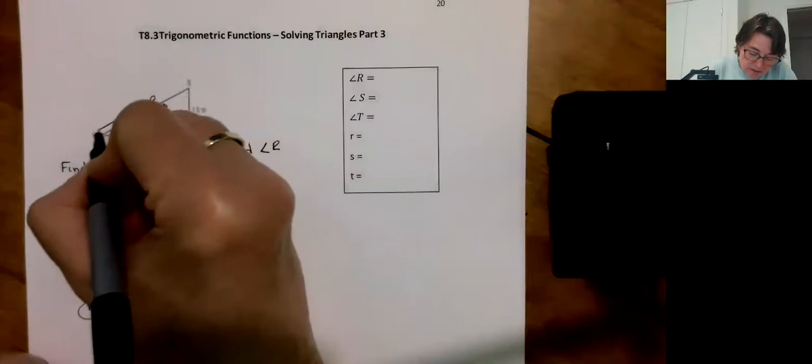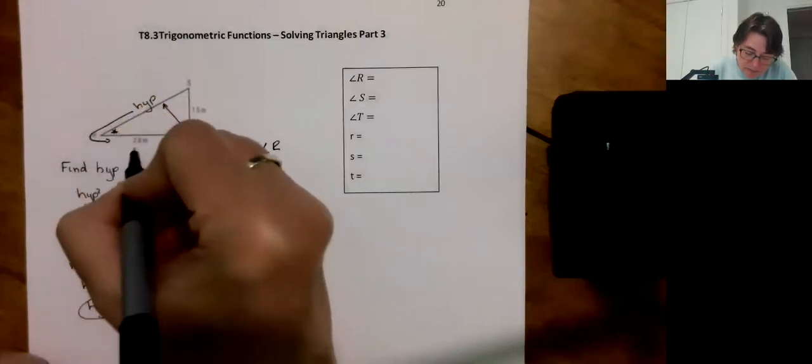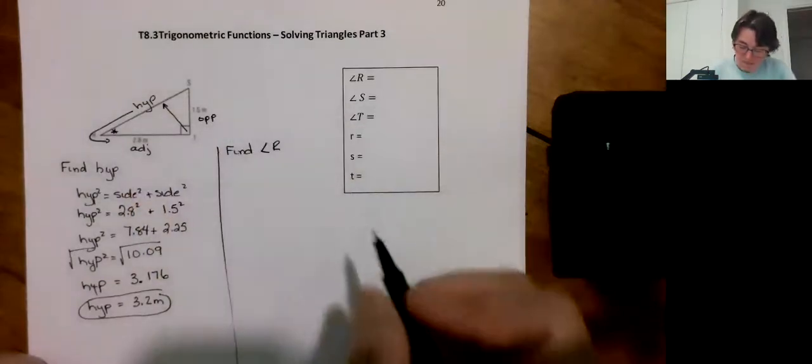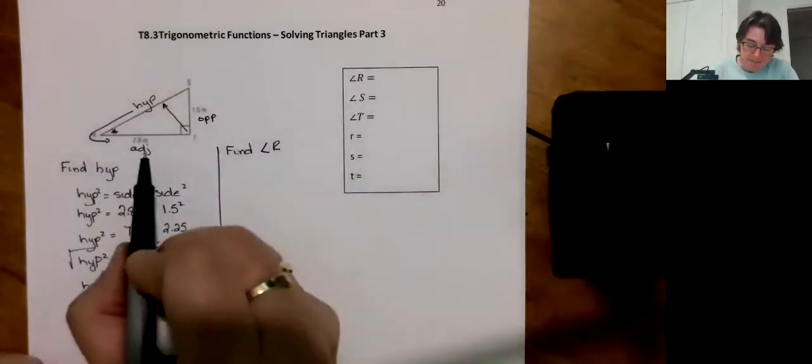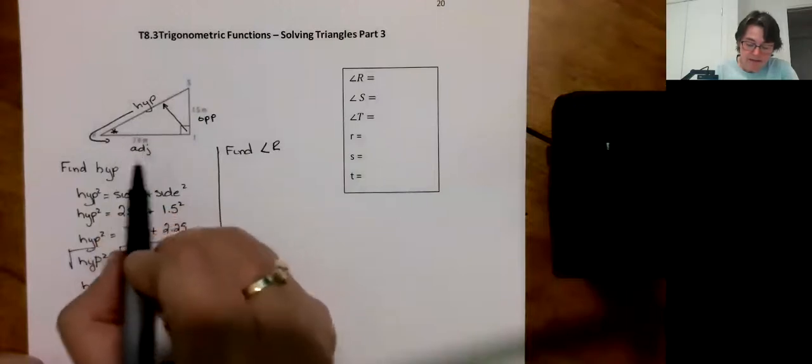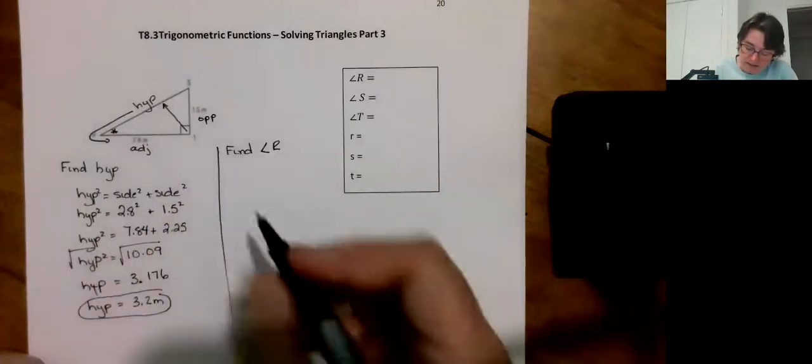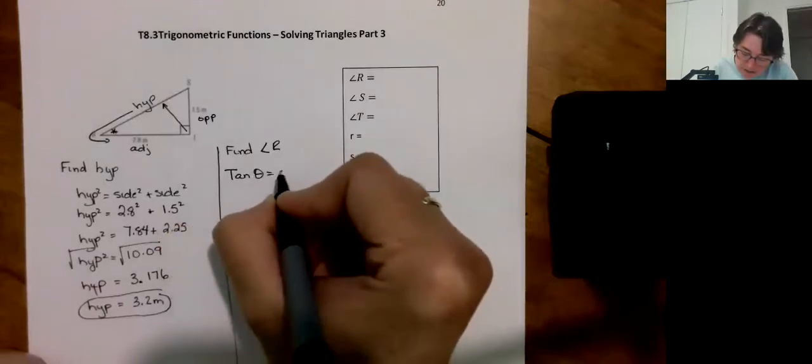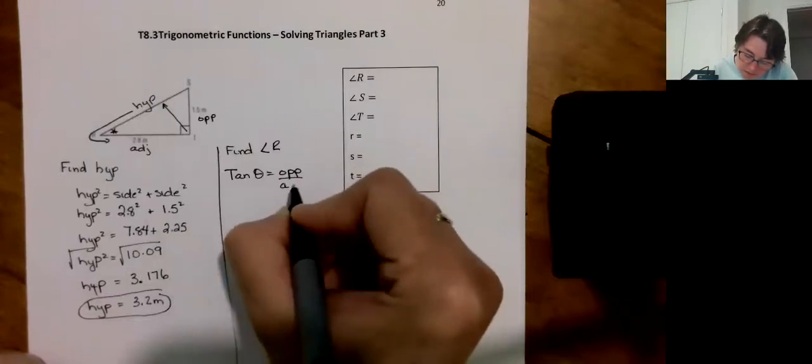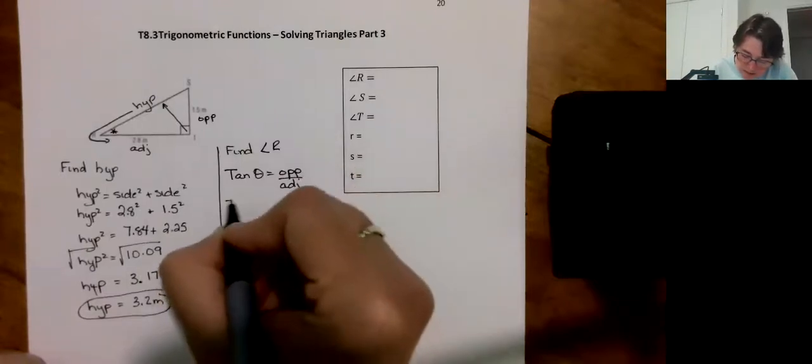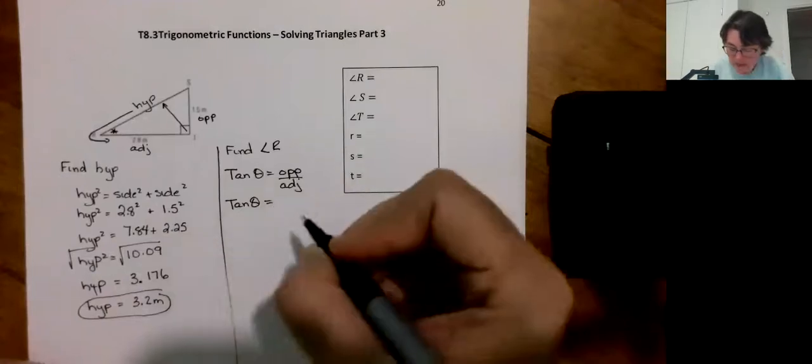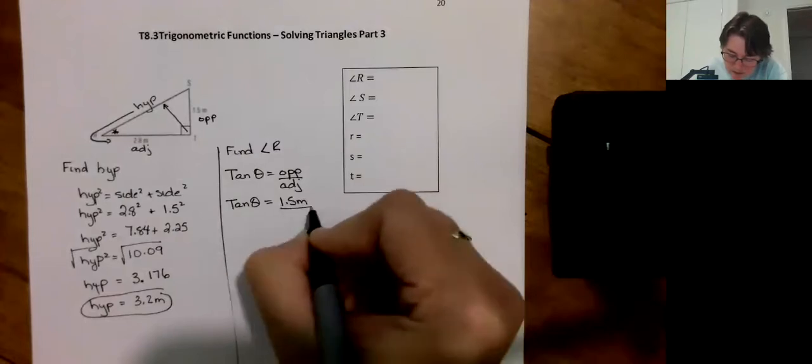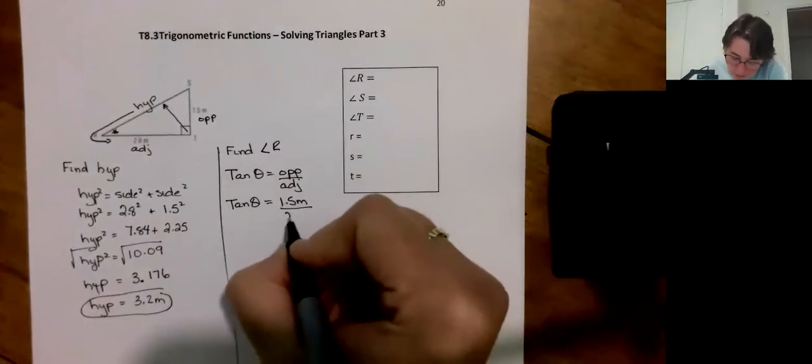So I go down my hypotenuse around R, which makes this adjacent. And this is the opposite. But I don't want to use my hypotenuse. I have my adjacent and I have my opposite. That's going to be tangent. So tan theta is the opposite over adjacent. Tan theta, that's the opposite, it's 1.5 meters over adjacent, which is 2.8 meters.